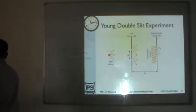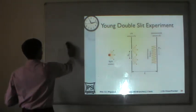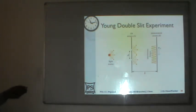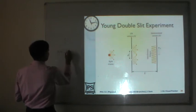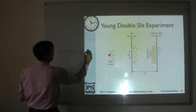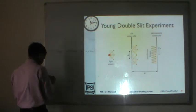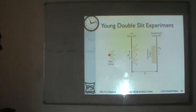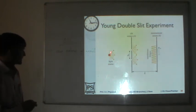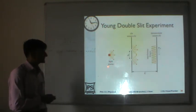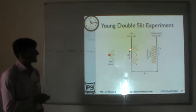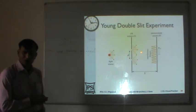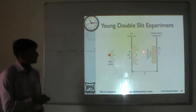Coming to the next topic: Young's double slit experiment. This was a classic experiment conducted in 1801 that revealed the wave nature of light. It was the first experiment which showed that light behaves like a wave. In this experiment there is a light source emitting monochromatic light — light of a single wavelength.